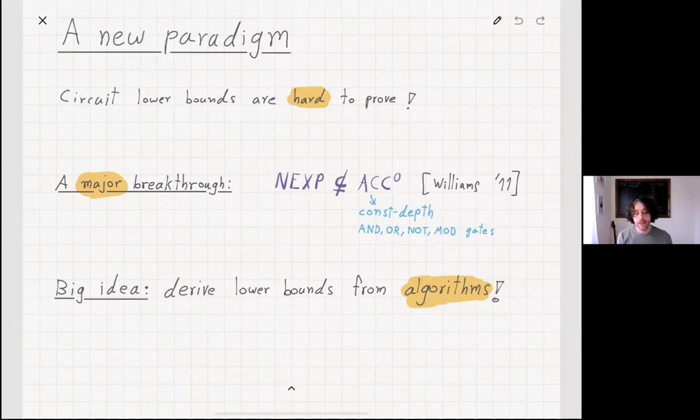At some time we learned to see that circuit lower bounds are just extremely hard to prove. Often if we see a result that tells us this would imply a circuit lower bound, I'm getting quite intimidated, because surely it's too hard to show.